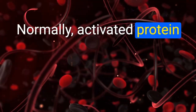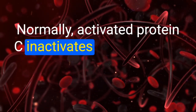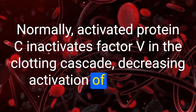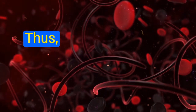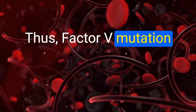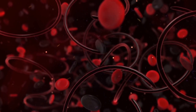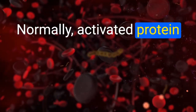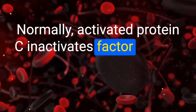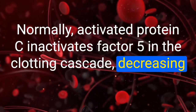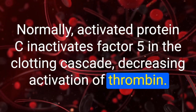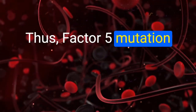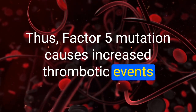Normally, activated protein C inactivates factor V in the clotting cascade, decreasing activation of thrombin. Thus, factor V Leiden mutation causes increased thrombotic events — the mutated factor V is resistant to inactivation by activated protein C.